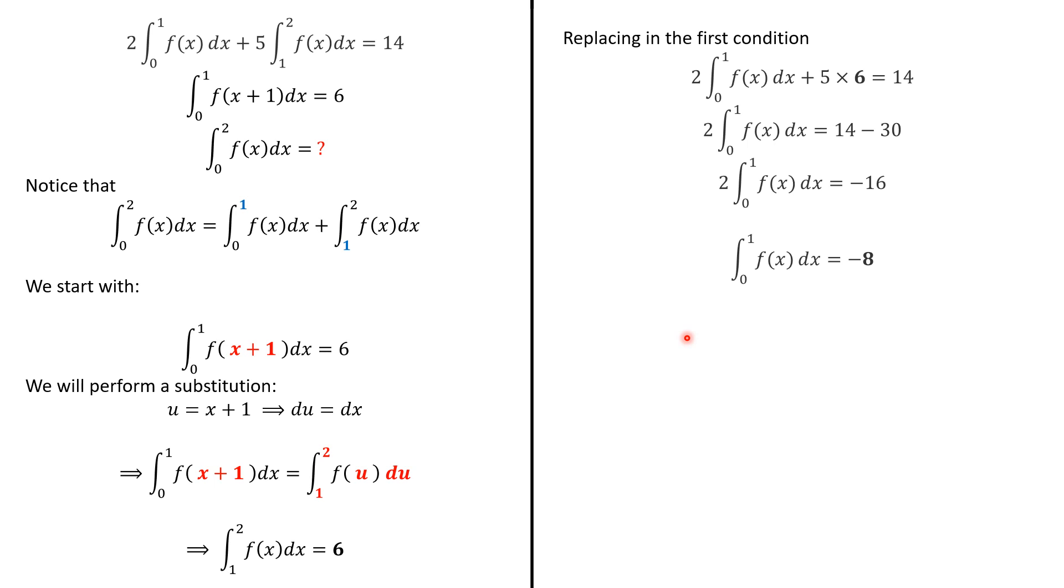And therefore, we can conclude by adding those two integrals. And then the integral from 0 to 2 of f(x) dx is 6 minus 8, which is minus 2. And then the right answer was C, and we're done. Thank you for your attention.